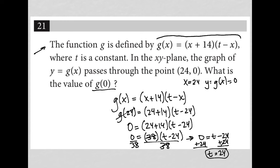So now how does that help me? That helps me to rewrite my g(x) with a t value instead of just using the t. So instead of (x + 14)(t - x), it turns into (x + 14)(24 - x). Now I've used everything that's been provided and can go on to actually answering the question.